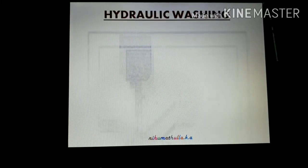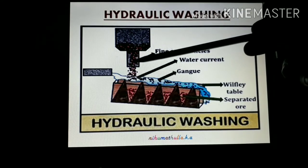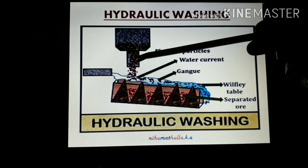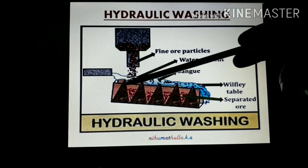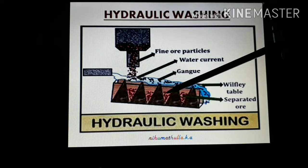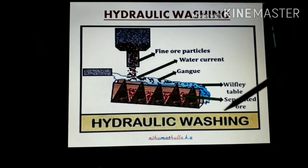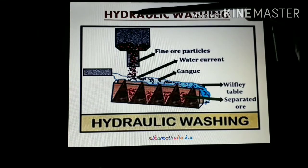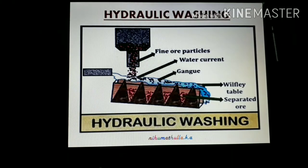In the hydraulic washing diagram, the fine powder ore is passed through a hopper. Running water flows in a sloping manner. High specific gravity ore particles are deposited at the bottom. Low specific gravity gangue particles are carried away by the running water and removed. This is called gravity separation or hydraulic washing, used to concentrate oxide ores. This is the first method of the concentration process.